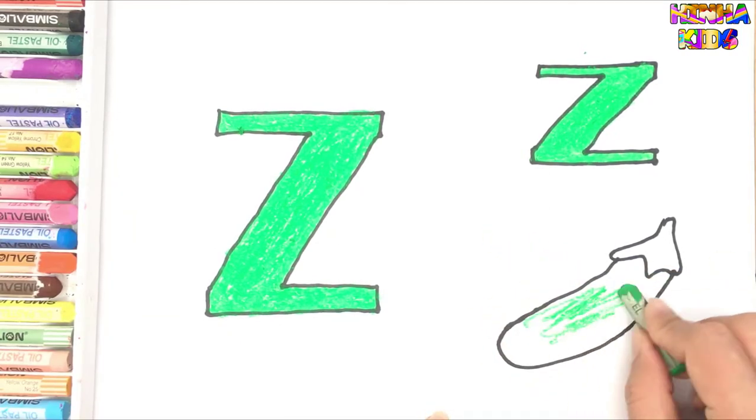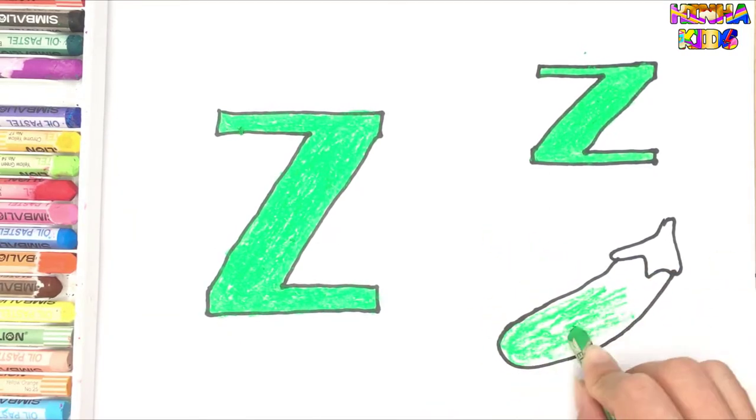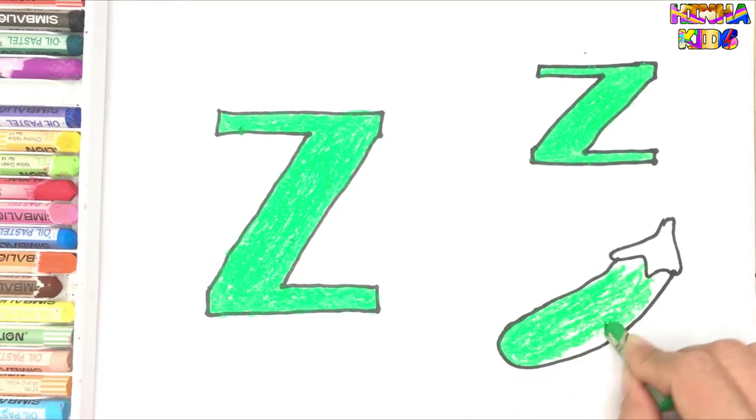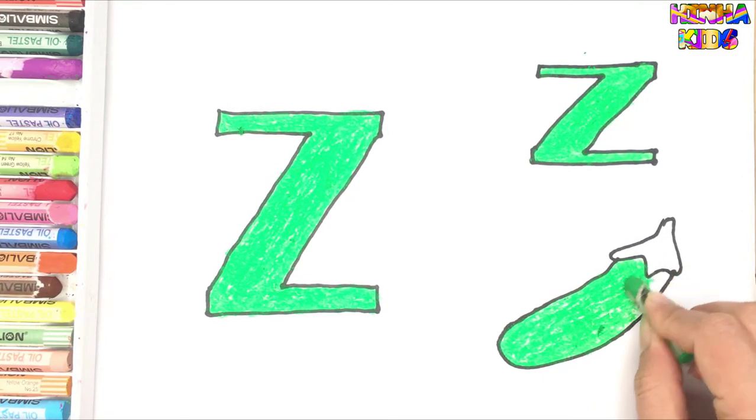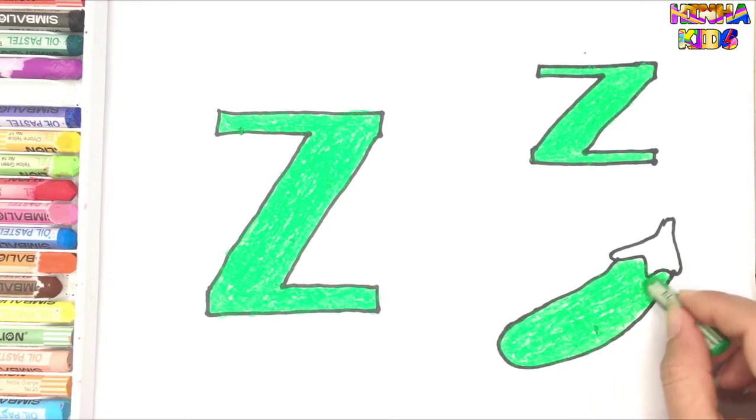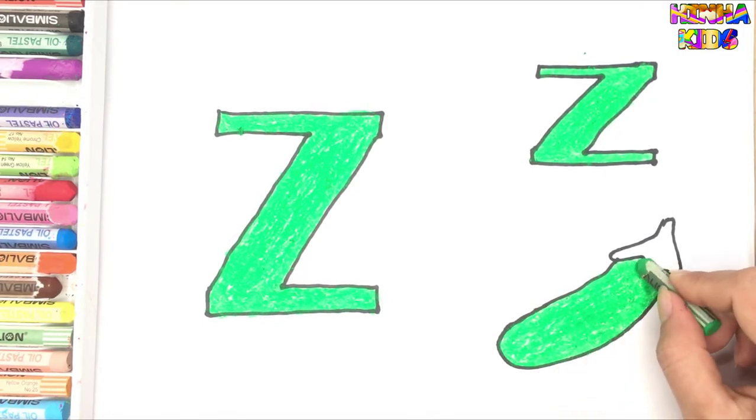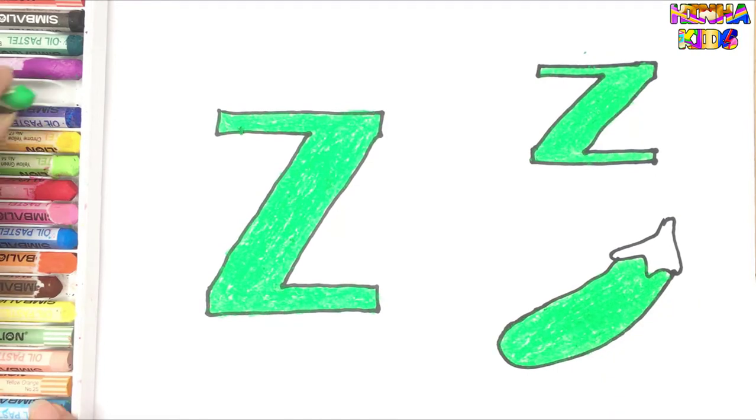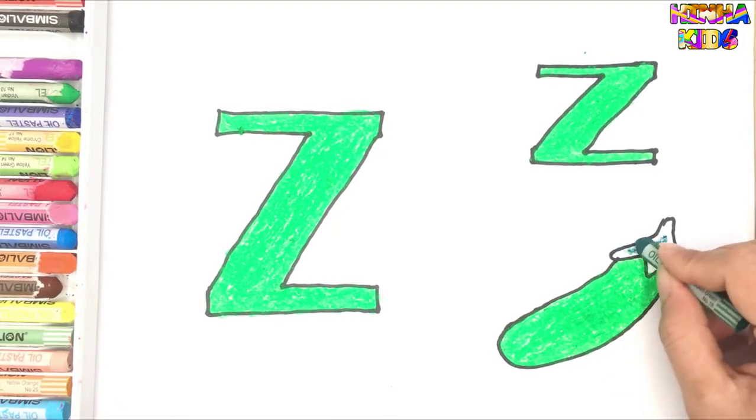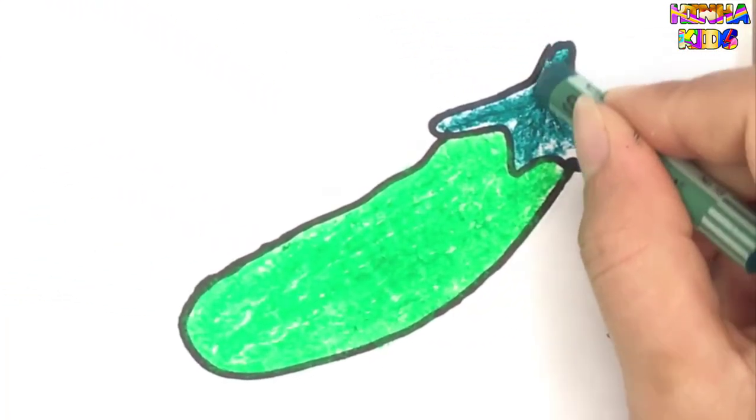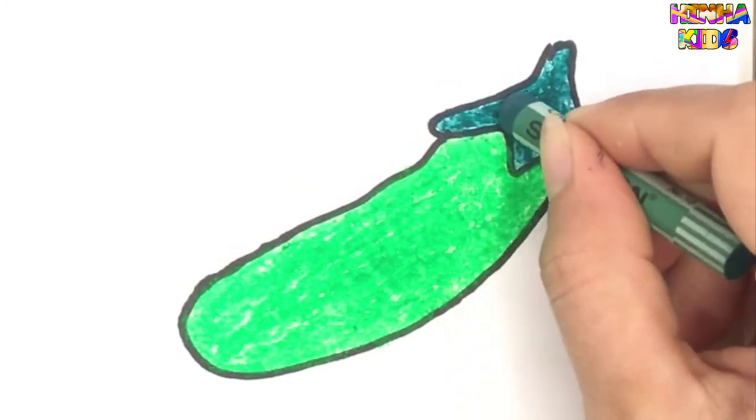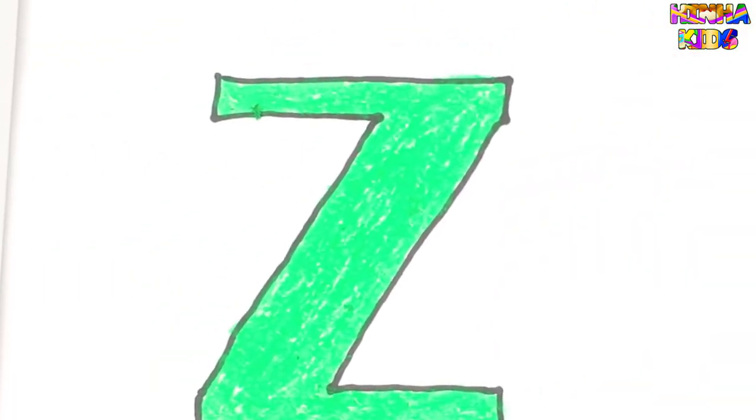Zucchini. Zucchini, it is the zucchini. What color is zucchini? It is green. Z, Z.